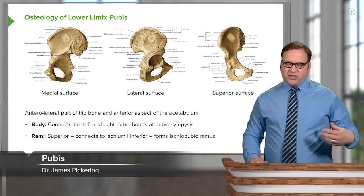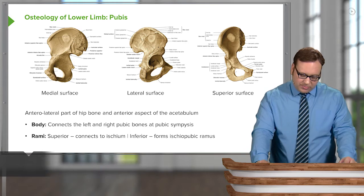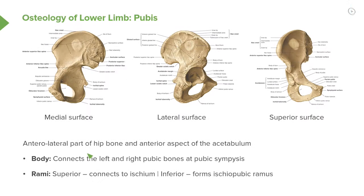Let's turn to the pubis, or the pubic bone. This is the anterolateral part of the hip bone and the more anterior part of the acetabulum. We can draw a kind of cross: above we have the separation with the ilium, posteriorly we find the ischium, and anteriorly we have the pubis. So this lower anterior part of the acetabulum becomes the pubis.